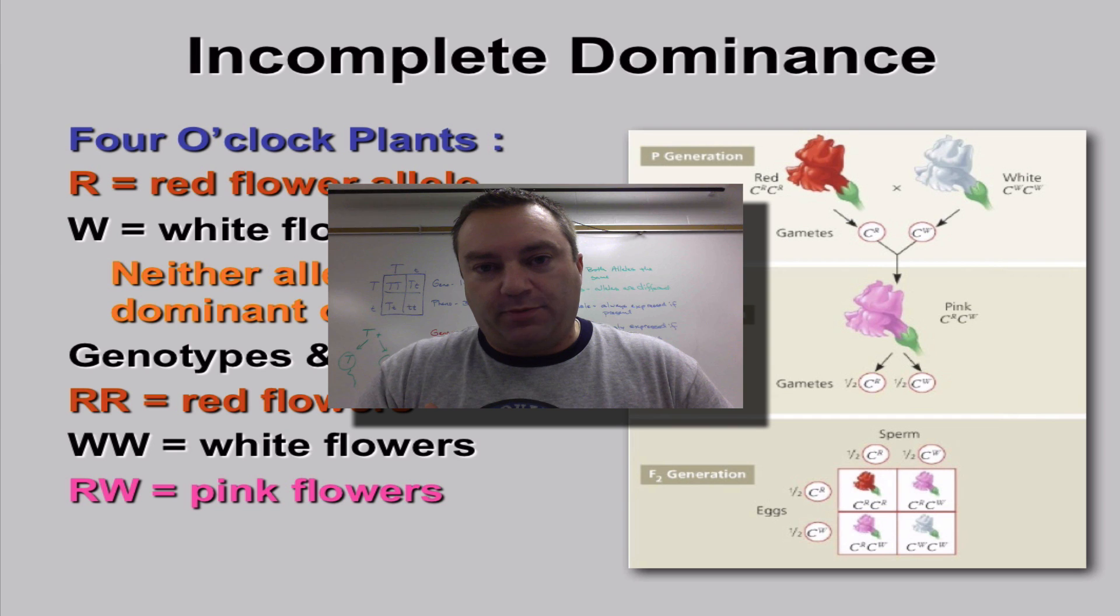Now, you've already learned how to do Punnett square problems using a monohybrid cross where you only track one trait, and you've also learned how to do a dihybrid cross where you track two traits. So we're going to learn how we do Punnett square problems with incomplete dominance in play and with codominance.